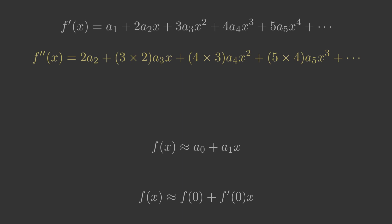On the right hand side the constant term a1 goes to 0. 2a2x becomes 2a2, 3a3x squared becomes 3 times 2a3x, 4a4x cubed becomes 4 times 3a4x squared, and 5a5x to the 4 becomes 5 times 4a5x cubed.